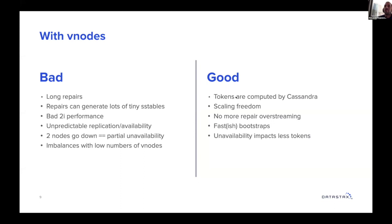The good thing: automation. Tokens are computed by Cassandra, so you don't need to build automation or compute tokens. You're free to scale as you wish — you can add one node and still have a balanced cluster, or double the size, and it's pretty much the same. You don't have repair over-streaming — that's fixed by vNodes. And you have kind of faster bootstraps because it involves all the nodes in the cluster, though results vary. Unavailability impacts less tokens.